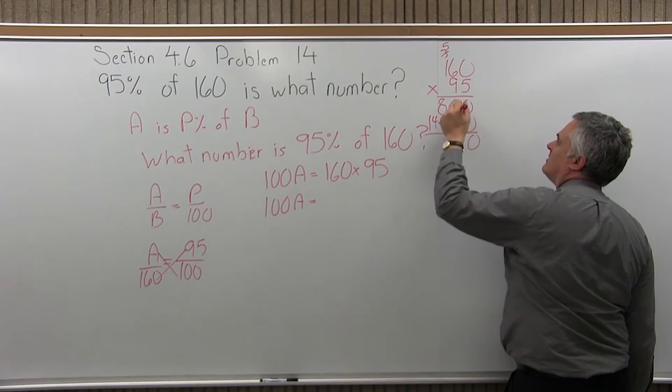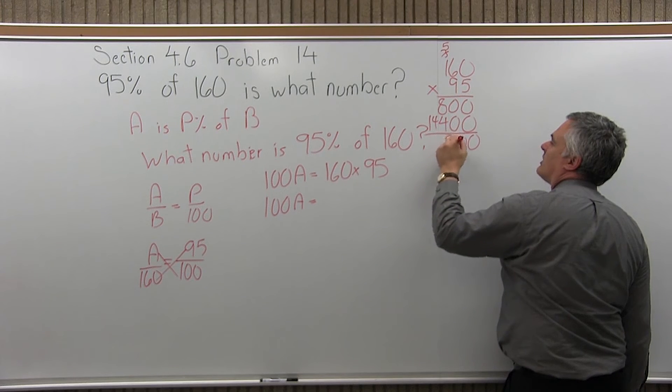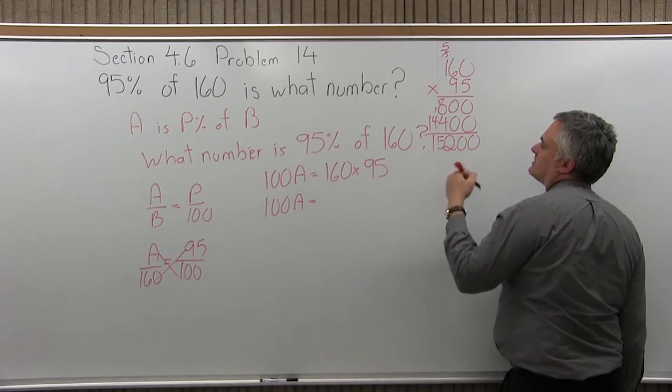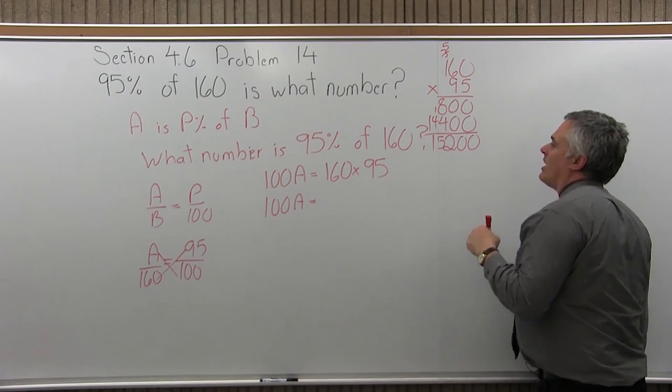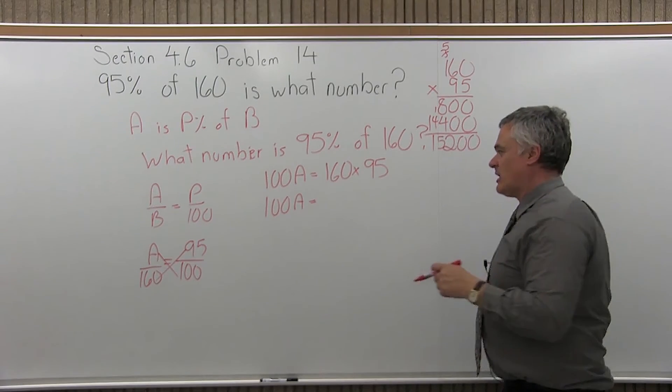0 plus 0 is 0. 0 plus 0 again is 0. 8 plus 4 is 12, write the 2, carry the 1. 1 plus 4 is 5. Nothing plus 1 is 1. So I have 152 with two zeros. So in other words, 15,200.